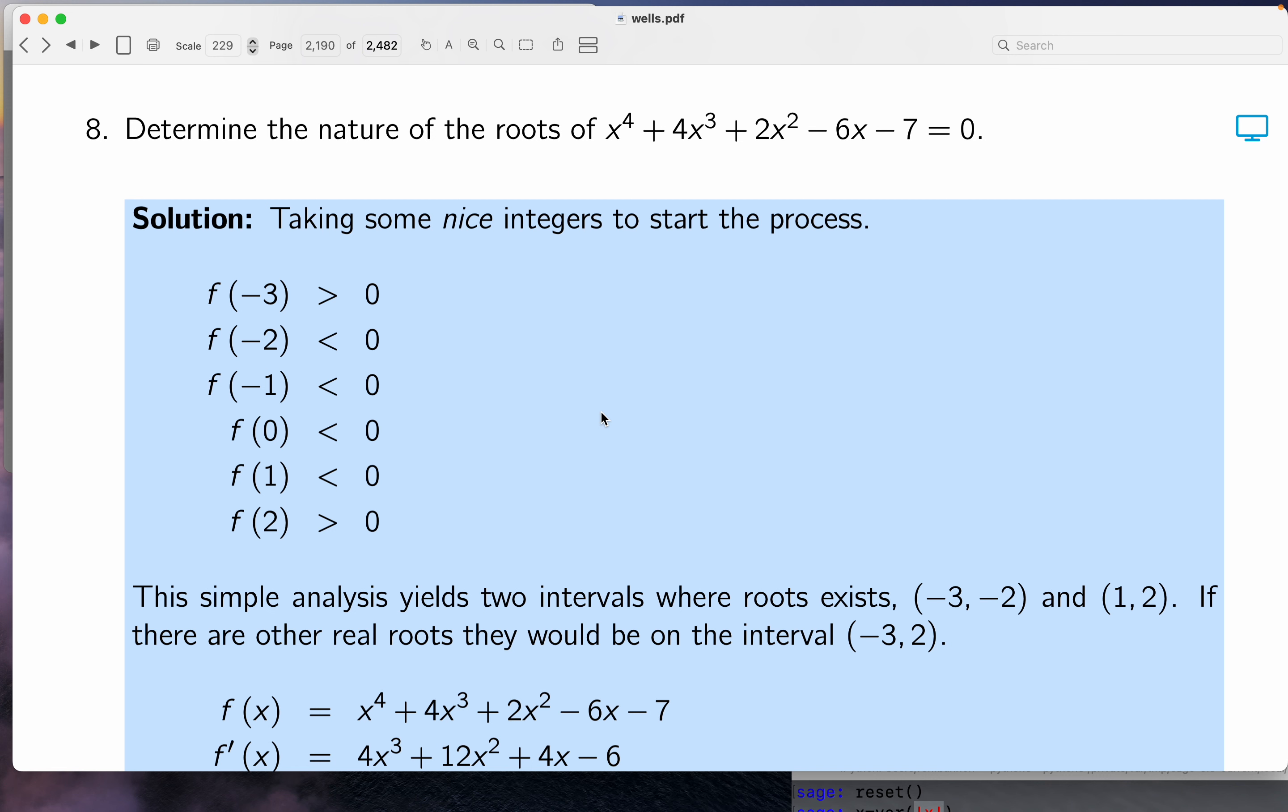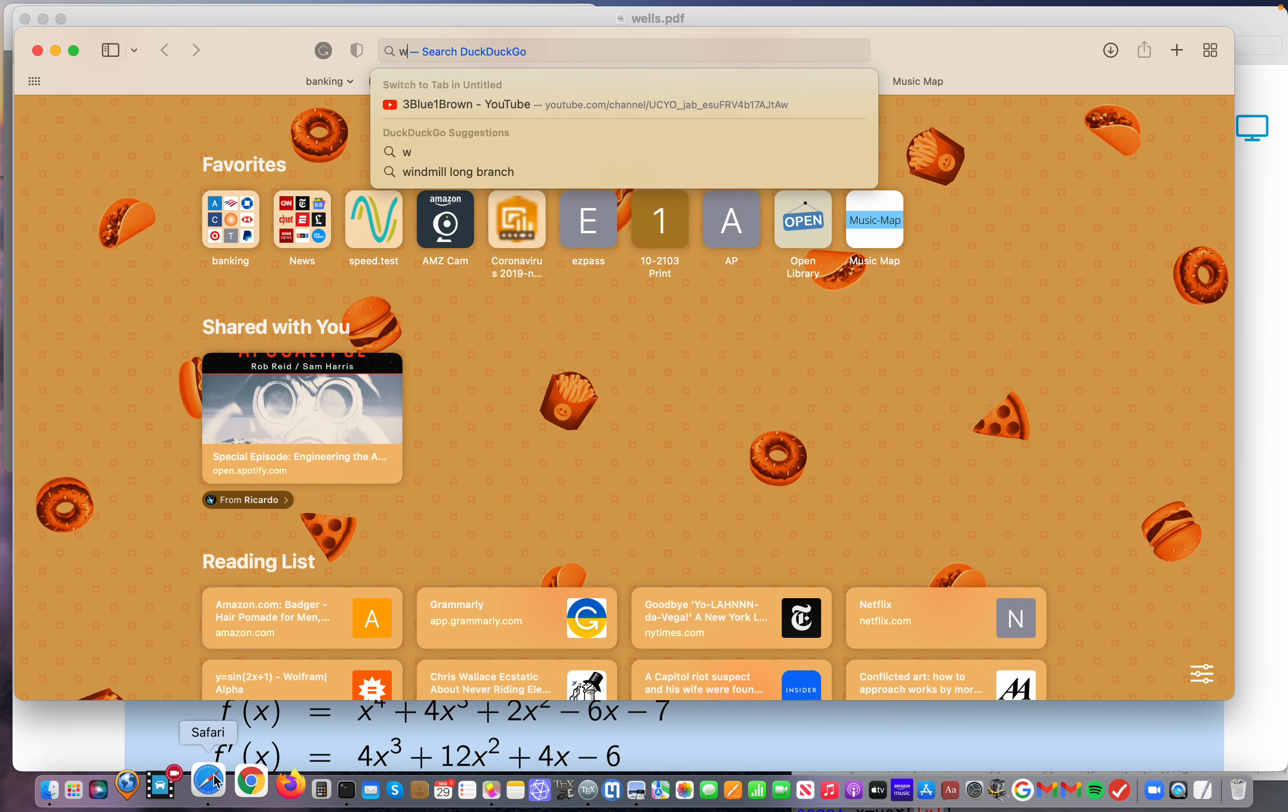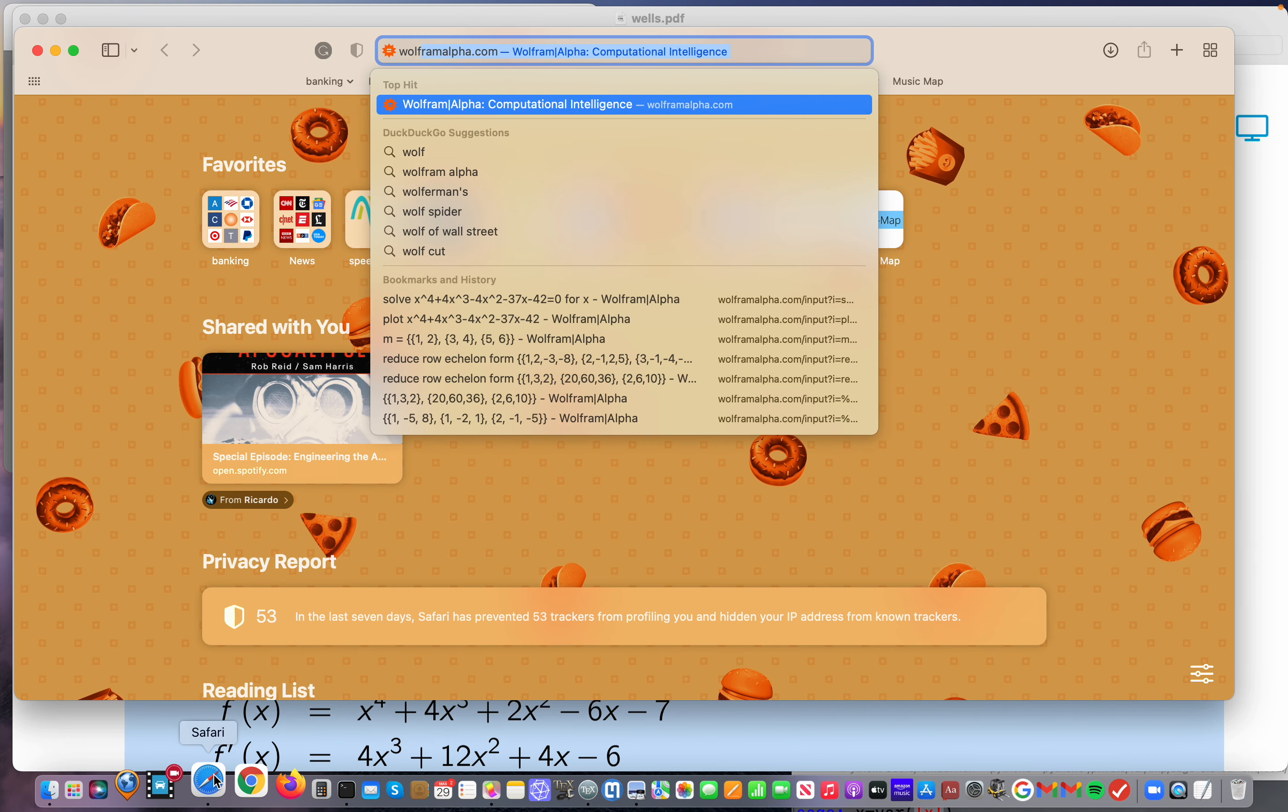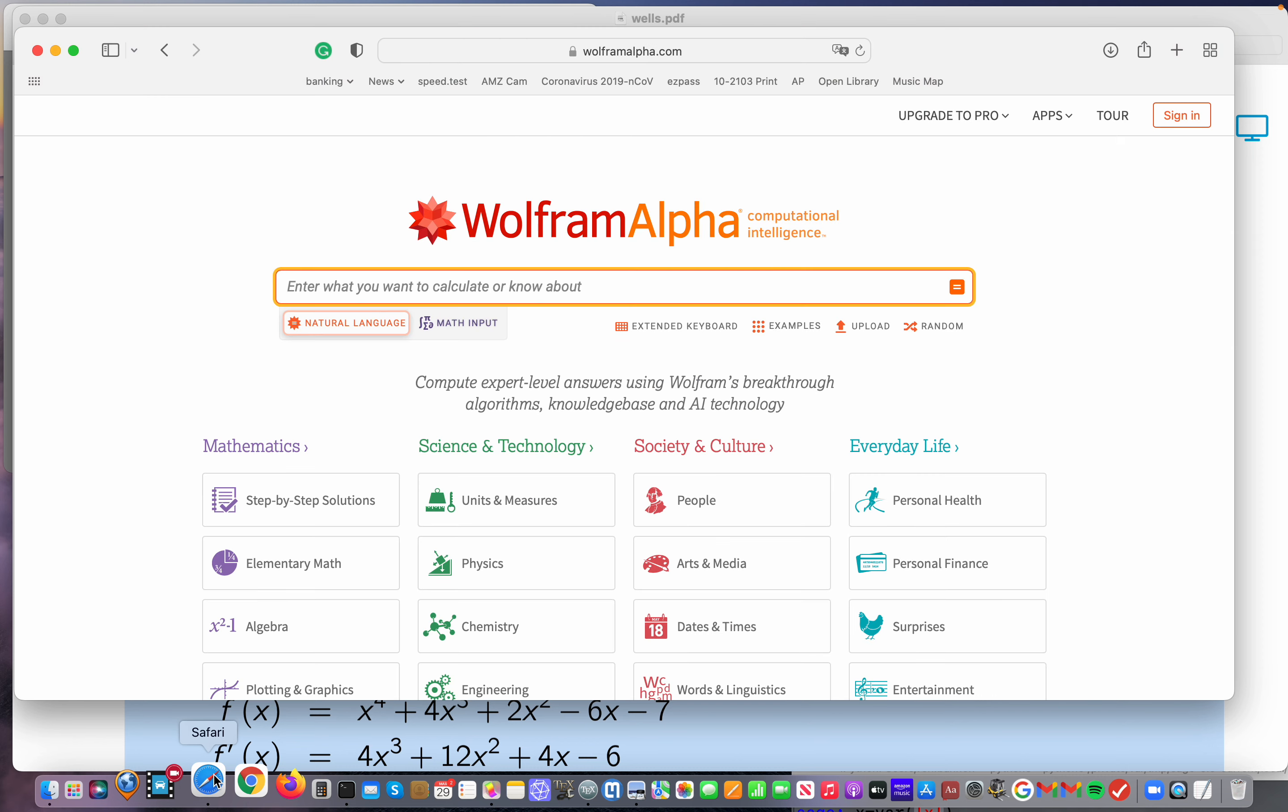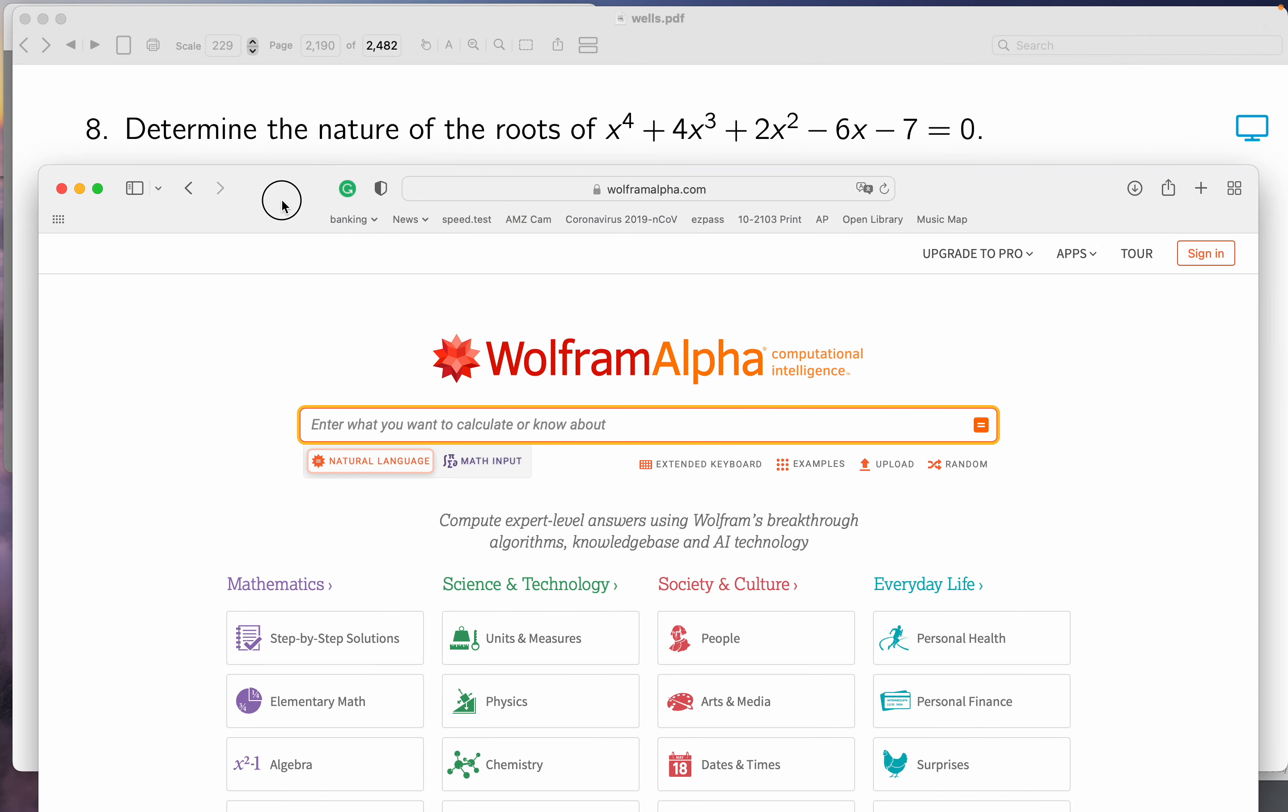So I've talked about using Sage. I've talked about using Grapher. Now I want to go to the web, and that's something I think most people have access to. I'm going to open up Safari, use any browser you like. I'm going to go to Wolfram Alpha. It's a great place to go, and I'm going to pull this down and type that in. I'm going to type in plot.